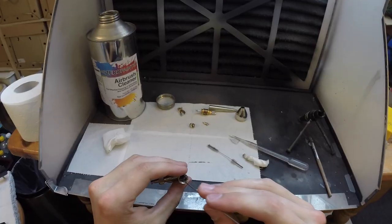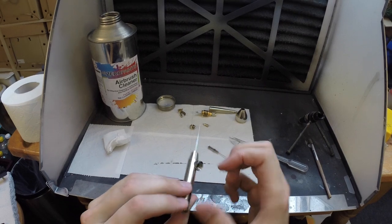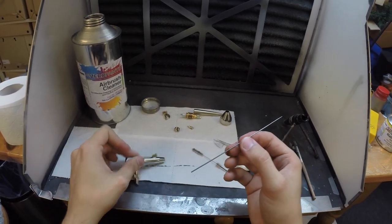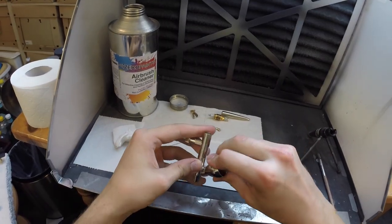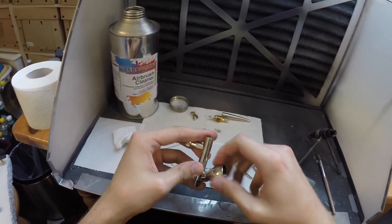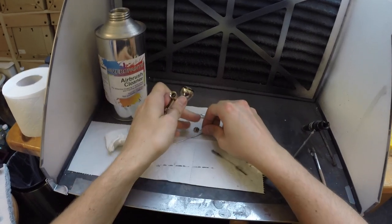Now pretty much the final check is running the needle through the airbrush and seeing if there's any paint on there. If there is, I'm going to keep running it through there and cleaning it off until all the paint is gone. And when all the paint is gone, it's time for reassembly.